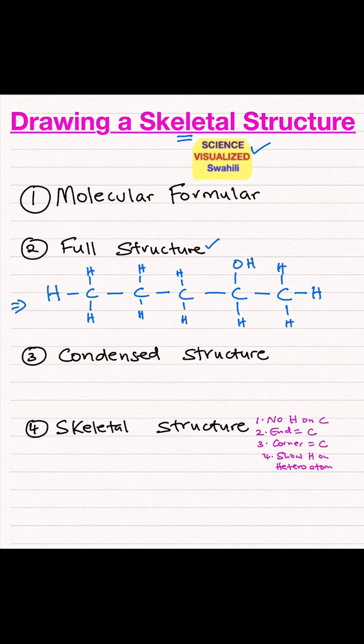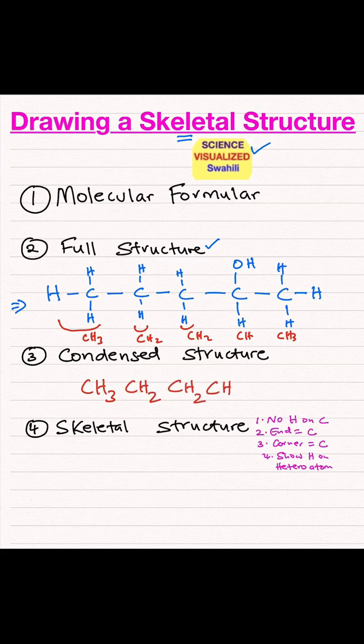The condensed structure—we're going to summarize this. This will be CH3, then CH2, CH2, then a CH with an OH, and this is a CH3. So it becomes CH3, CH2, CH2, the CH with an OH on it, and the last CH3. That becomes a condensed structure.